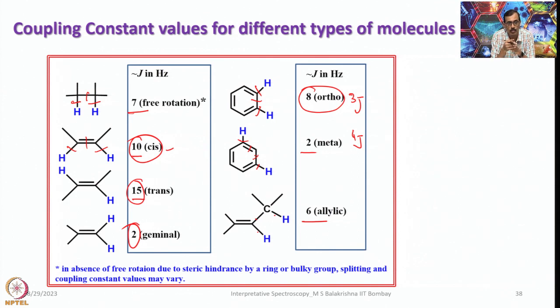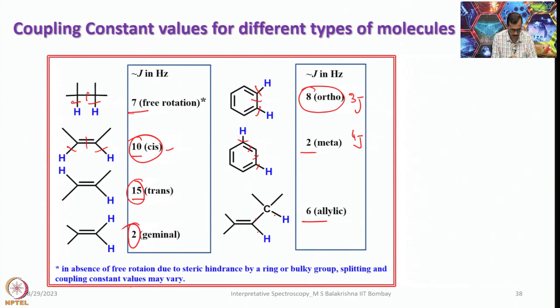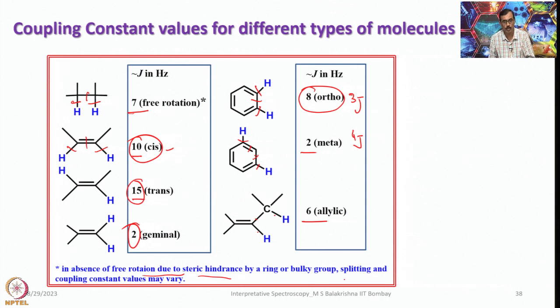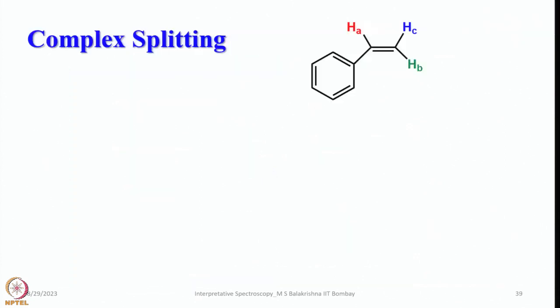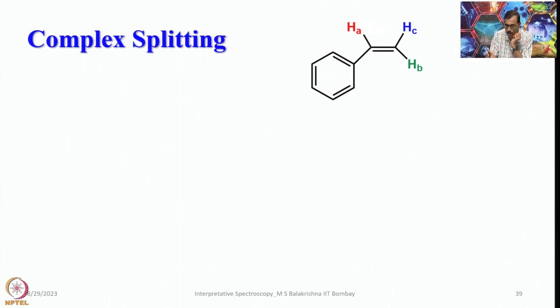By repeatedly interpreting the spectra of several organic molecules, you will learn the typical magnitude of coupling constants. In the absence of free rotation due to steric hindrance by a ring or bulky groups, splitting and coupling constant values may vary. Coupling constants are often conformation sensitive.